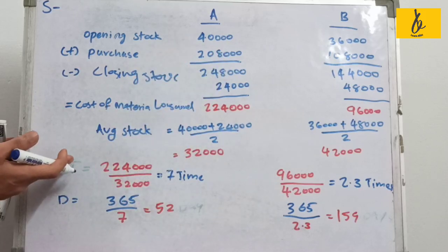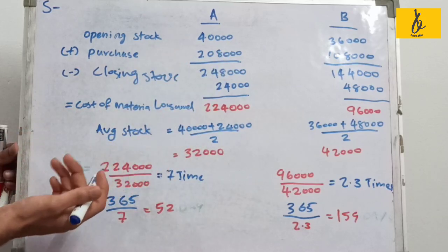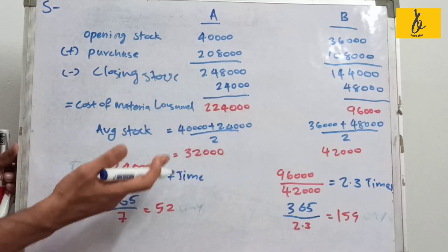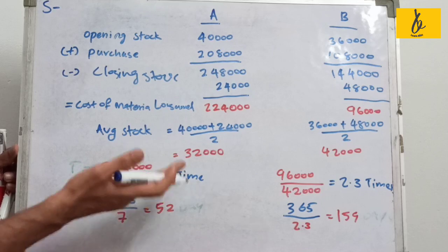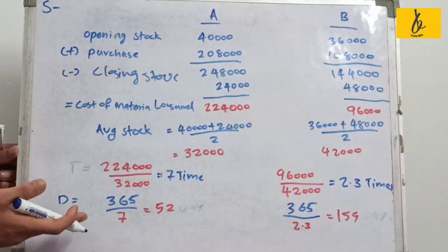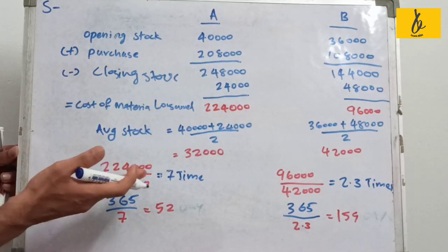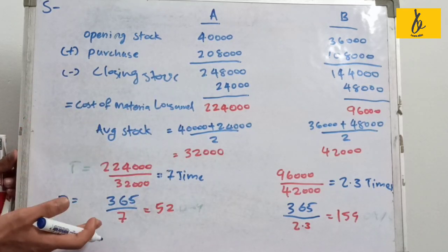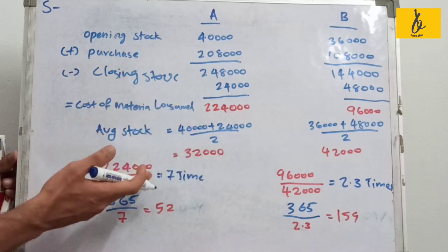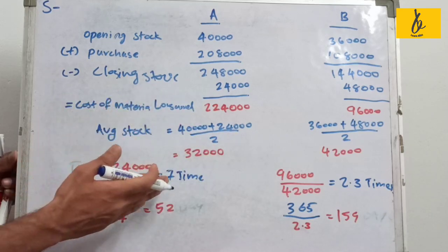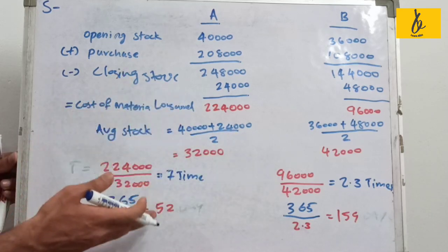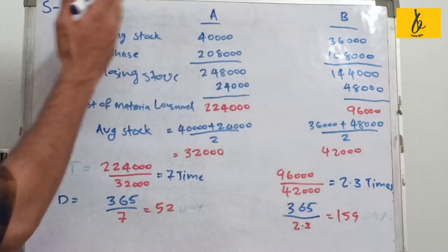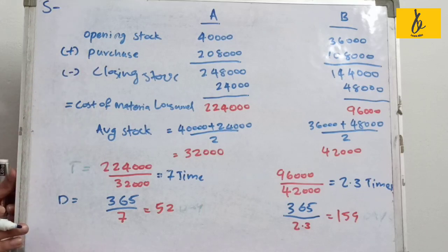To summarize: the inventory turnover ratio equals cost of material consumed divided by average stock. The number of days is 365 divided by the inventory turnover ratio. Thank you for watching our channel.